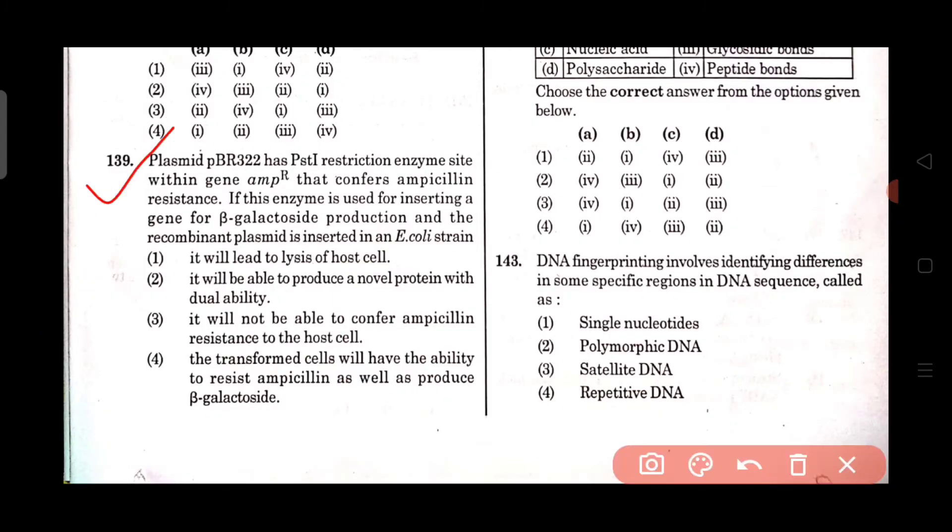Question number 139: Plasmid PBR322 has PST1 restriction enzyme site within gene ampicillin resistance that confers ampicillin resistance. If this enzyme is used for inserting a gene for beta-galactosidase production and the recombinant plasmid is inserted in an E. coli strain, it will lead to lysis of the host cell, be able to produce a novel protein with dual ability, not be able to confer ampicillin resistance to the host cell, or the transformed cell will have the ability to resist ampicillin as well as produce beta-galactosidase.